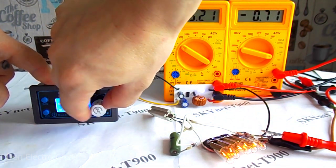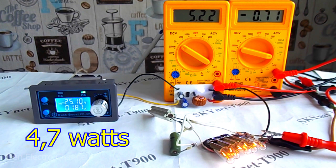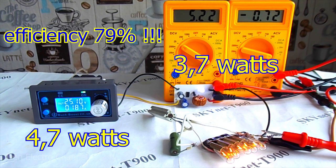I increase the voltage to 25 volts. The current is 187 milliamps. And at the output of the converter, the voltage and current strength rose slightly. The efficiency was 79%.